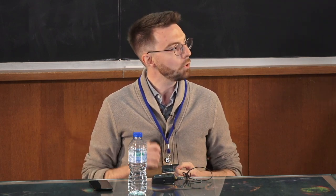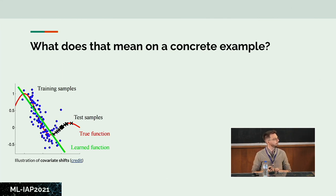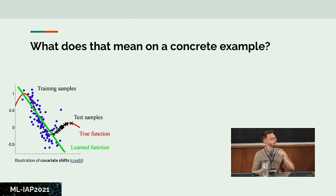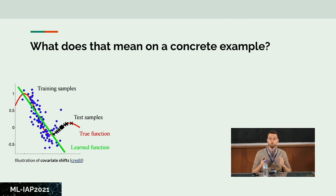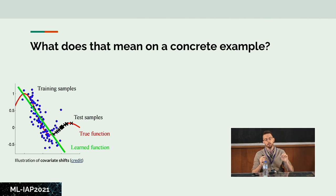Covariate shift is always a problem to some extent. A simple illustrative example: you have a few data points and fit a green function, but the actual function is the red one for which you don't really have training data. In practice that's what we do all the time — we train on some data points, and if we're not extremely careful about how we build the training set, the function we optimize may not be optimal for the target problem.